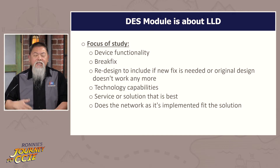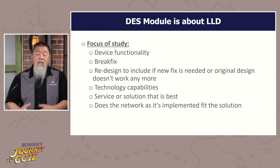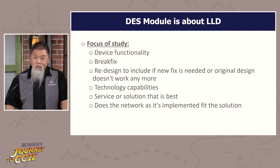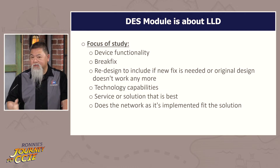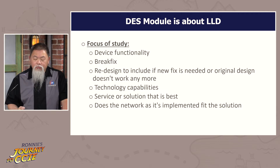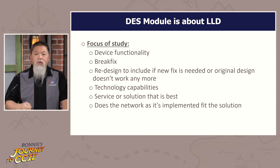Technology capabilities is also another aspect of this. Do we have the right device in place? Is this the right technology being implemented? When it comes down to design, one of the principles we also have to follow is: is the service or solution the best one for that particular requirement? We might find out that we could implement a solution that works, but it's not the best one. We also want to focus on whether the network, as it's actually been implemented, fits the solution that was proposed.